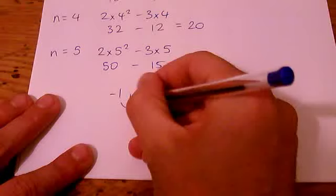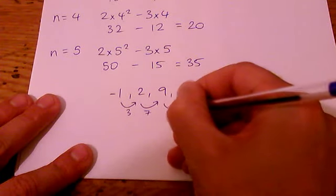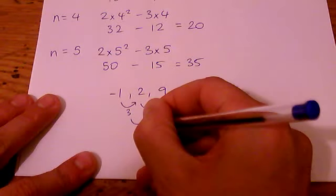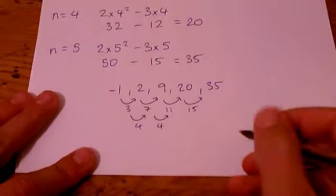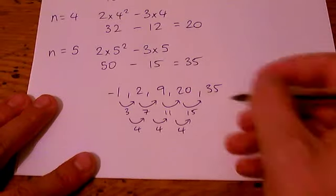If I do the difference that's 3, 7, 11, 15 and the second difference here is 4, 4, 4. So I know I've worked out my numbers correctly.